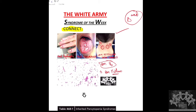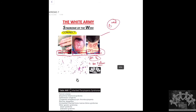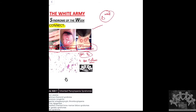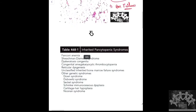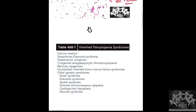Bone marrow failure along with this triad is classical of Dyskeratosis Congenita. The triad makes up Dyskeratosis Congenita — that is our syndrome for the week.